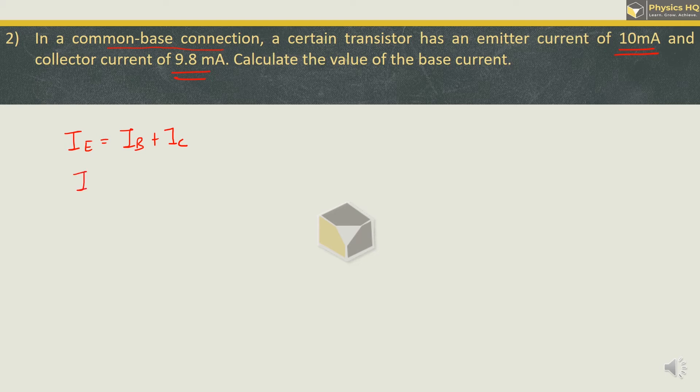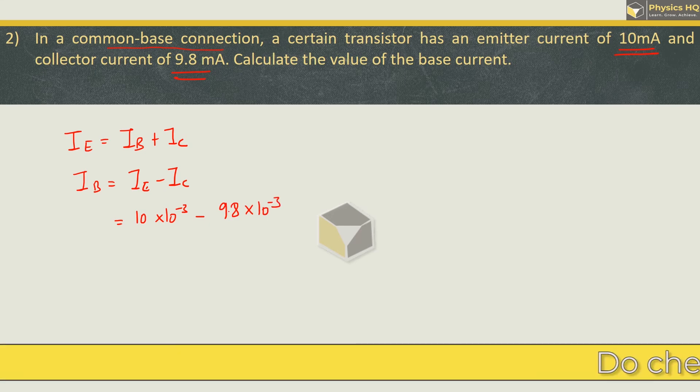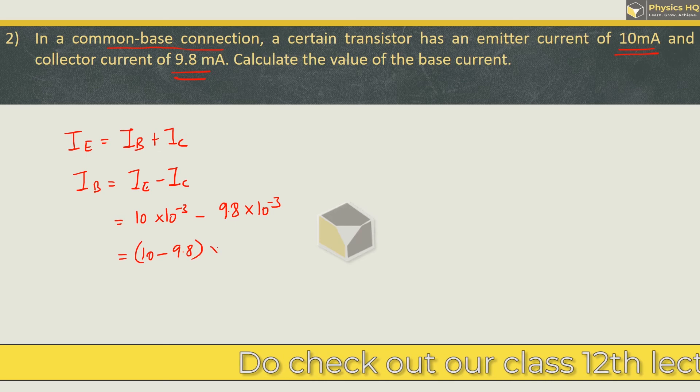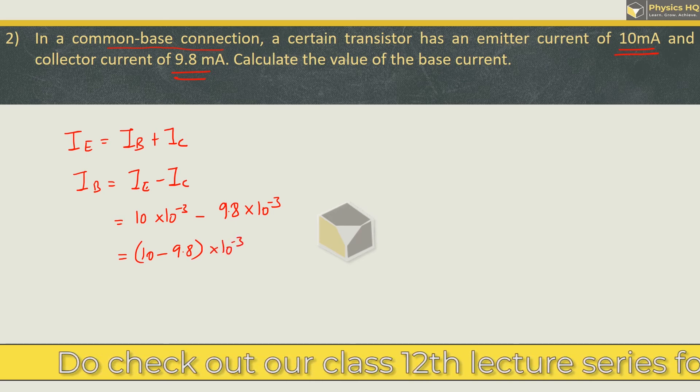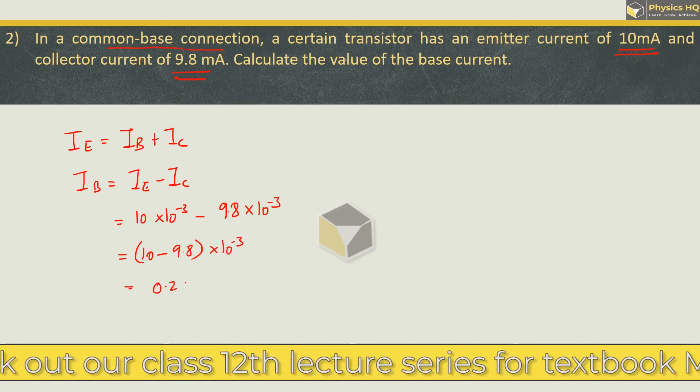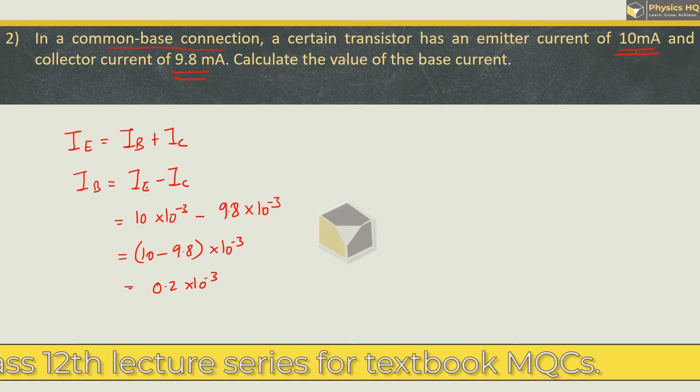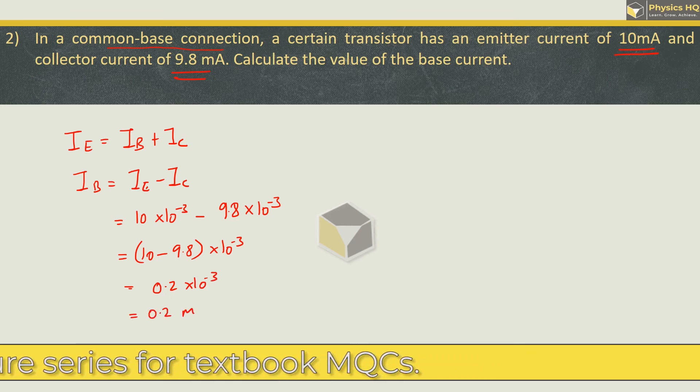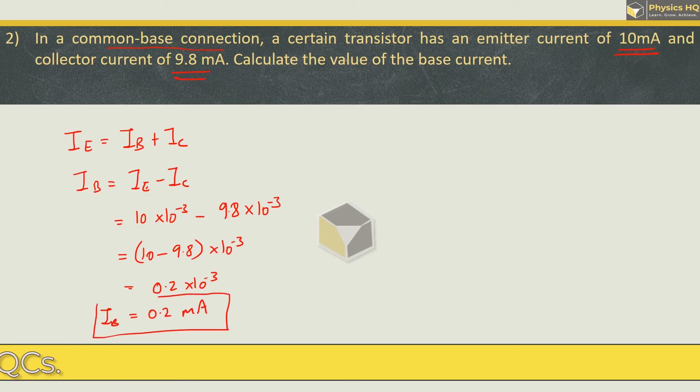So base current will be emitter current minus collector current. Emitter current is 10 times 10 raised to minus 3, and collector current is 9.8 times 10 raised to minus 3. This gives us 0.2 times 10 raised to minus 3, or 0.2 mA. So this is the base current.